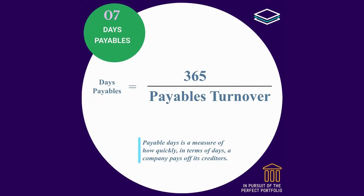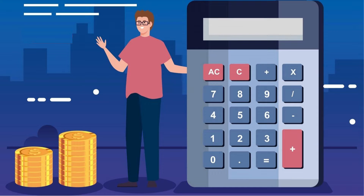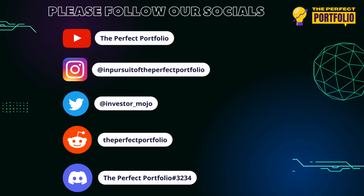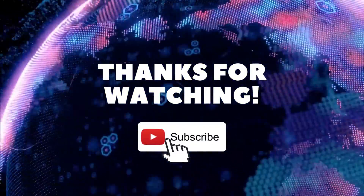Days payables is equal to 365 divided by payables turnover. Payable days is a measure of how quickly, in terms of days, a company pays off its creditors. With that we come to the end of this video. Please do let me know your thoughts in the comments section. Hope you found it useful. Please check out our social media, and if you like the content, be sure to drop some likes, comments, and share it with your connections.